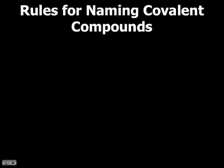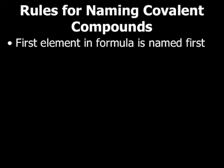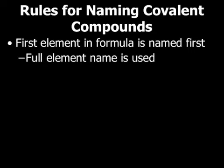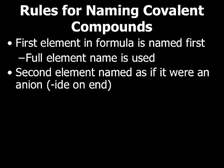So the rules that we use for naming compounds that are covalent are similar to the rules that we use for ionic with just a couple minor changes. We're still writing the name of the first element with its whole name, so the full element name is used. The second element is named as if it were an anion, which just means dropping the ending and adding an -ide.